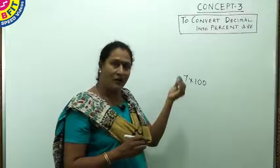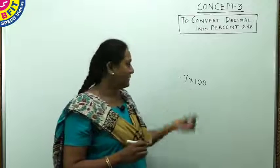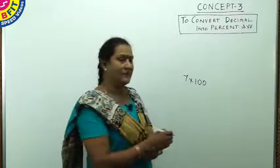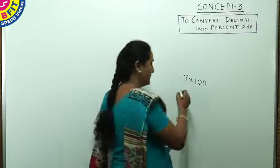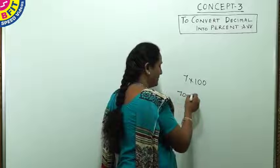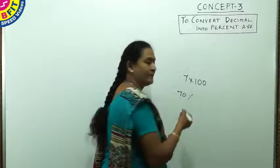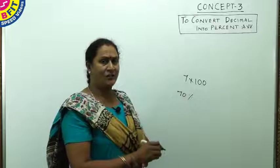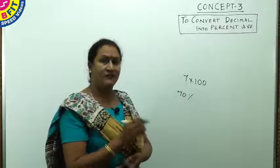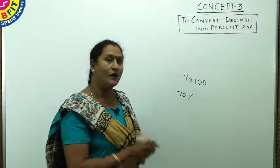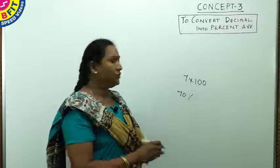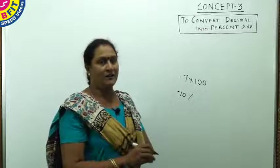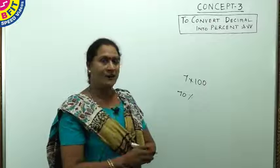To convert a decimal to percent, multiply it with 100. So, 0.7 into 100 is 70 percent. Any value, whether it is a fraction, an integer, or a decimal, to convert to percent, multiply the given number with 100.